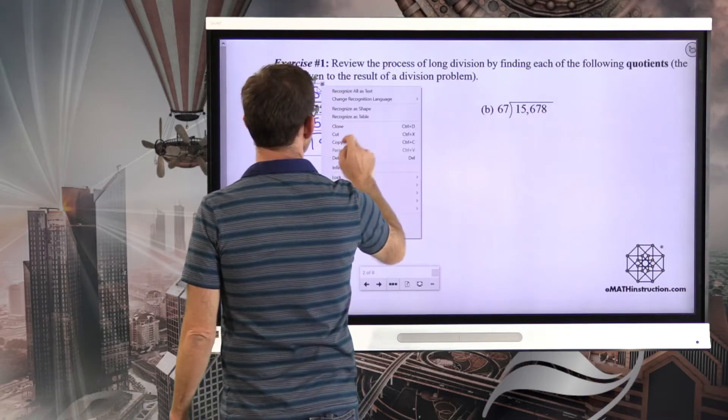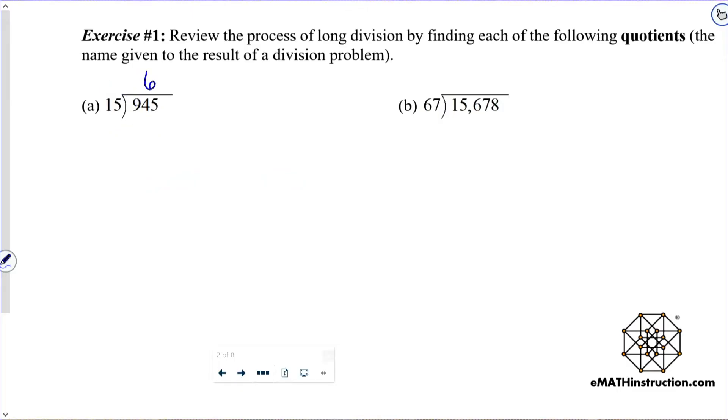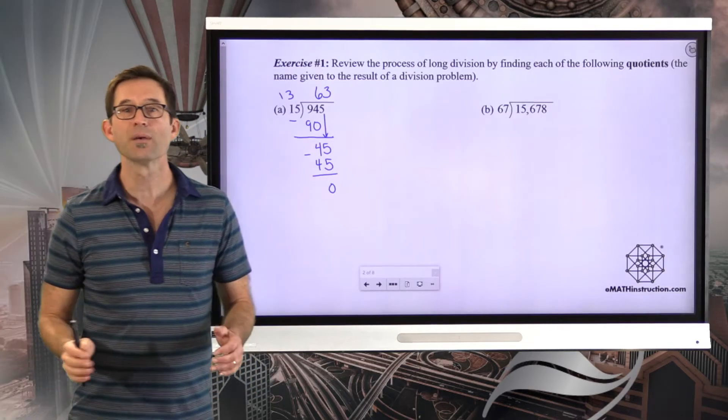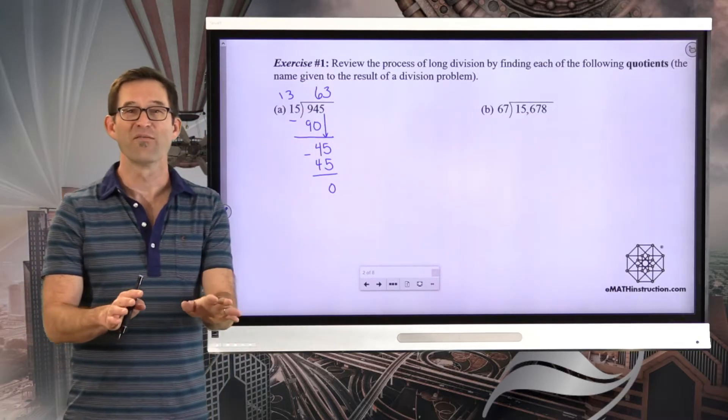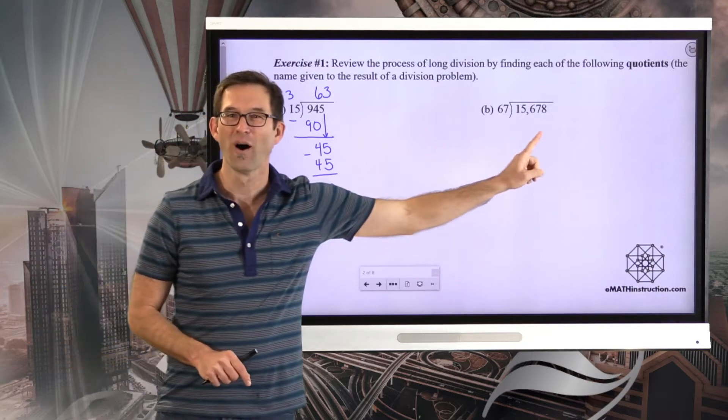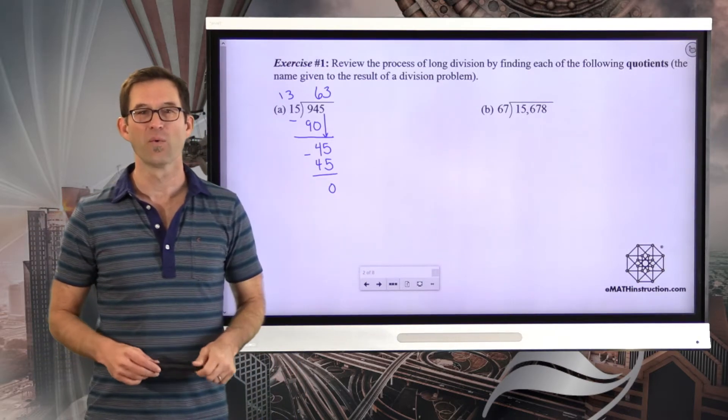So now I can say six times. Six times five is 30, six times one is six plus three is nine, so I get 90. When I do the subtraction, I get four. I drop the five down. Now I have to think about how many times 15 goes into 45. That's going to be three. Three times 15 is 45. Subtract and I get a remainder of zero. So 945 divided by 15 is 63. Now I'm going to have you pause the video and work on the harder problem, letter B.